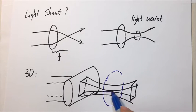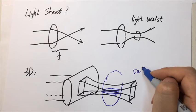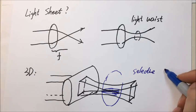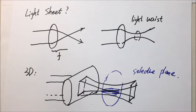Unlike conventional microscopies, this one can select only one plane near the light waist to illuminate and observe. That's why this is also called selective plane illumination microscopy.